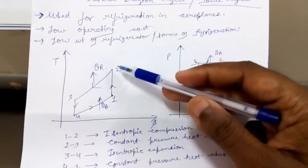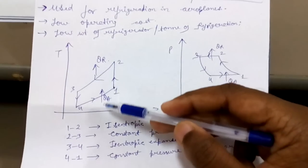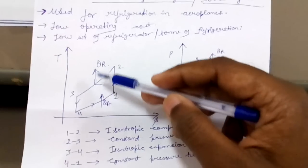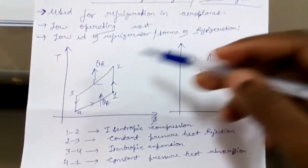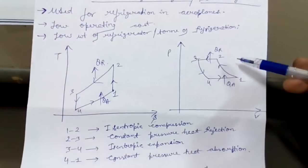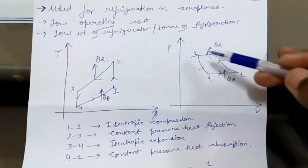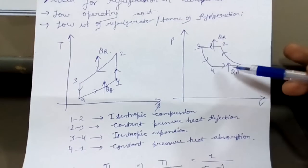From 1 to 2, 2 to 3, 3 to 4, 4 to 1. 4 to 1 heat absorption is the refrigeration effect and 2 to 3 is heat rejection to the atmosphere. In PV diagram you can see from 1 to 2, 2 to 3, 3 to 4, 4 to 1.